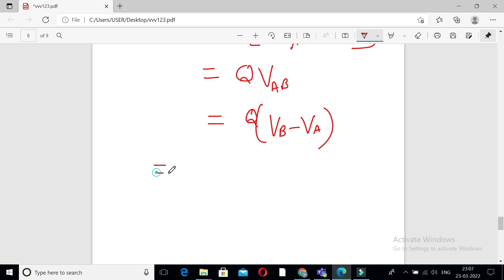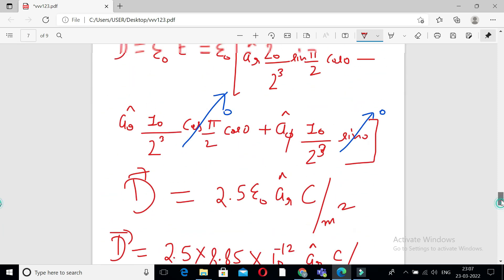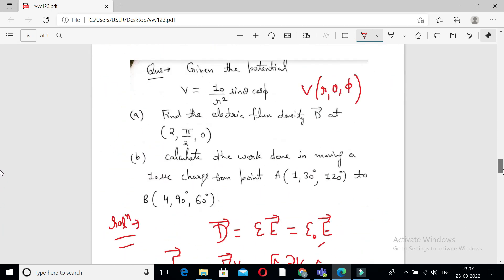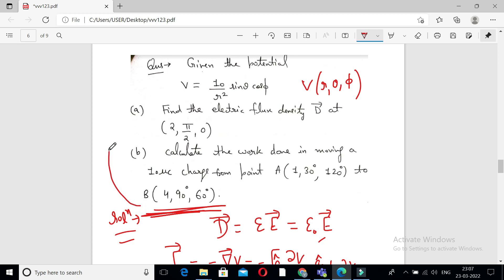We know charge is given as 10 microcoulomb. VB means voltage at point B, these are the points. We can put the values of these coordinates in this and we get the value of VB. We can put the values of A in this and we get the values of VA.